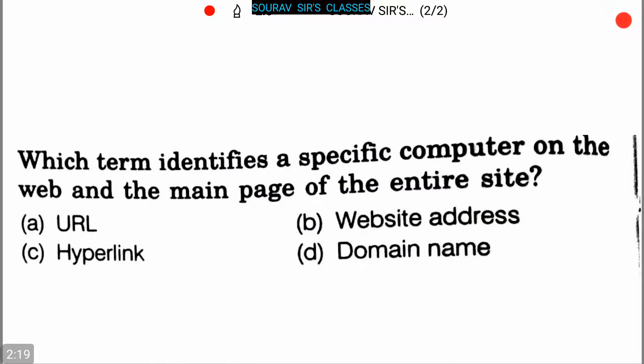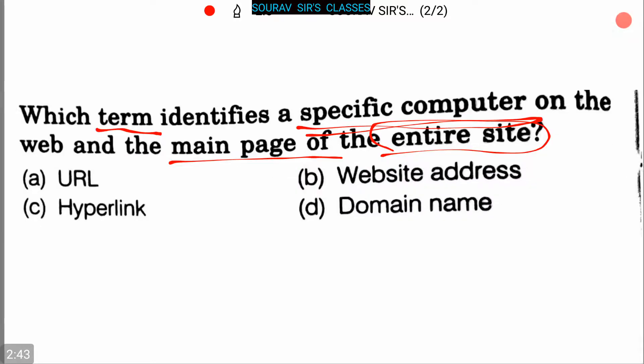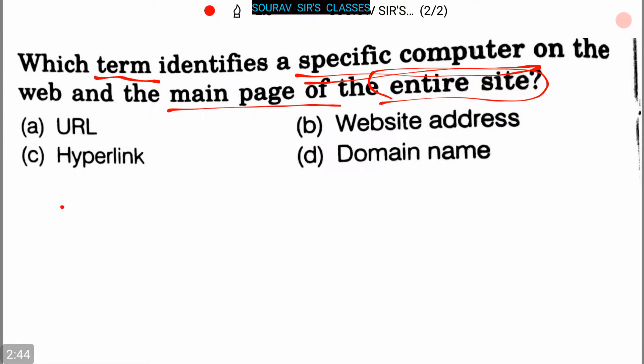Our next question is: Which term identifies a specific computer on the web and the main page of the entire site? Four options are given: option A is URL, option B is website address, option C is hyperlink, and the last one is domain name.